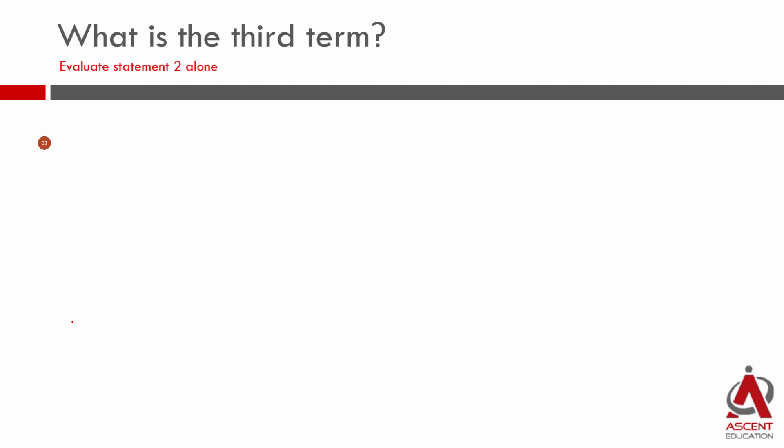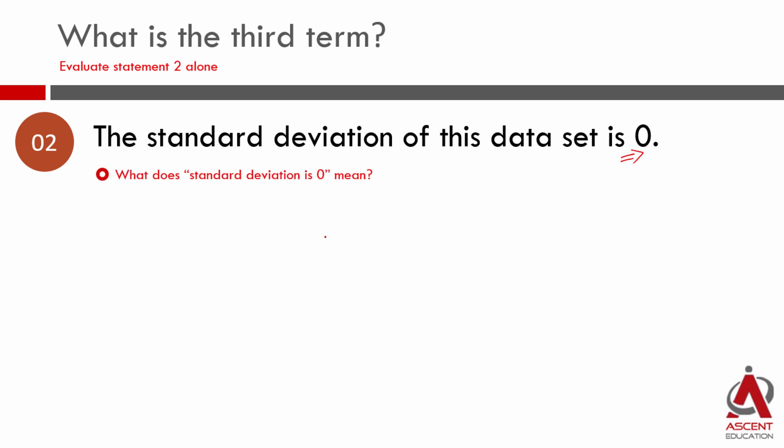Let's evaluate statement 2. Statement 2 says the standard deviation of this data set is equal to 0. First of all, what is standard deviation? Standard deviation is, on an average, the arithmetic mean of the data set. Each element deviates from the mean. Standard deviation 0 means there is no deviation.